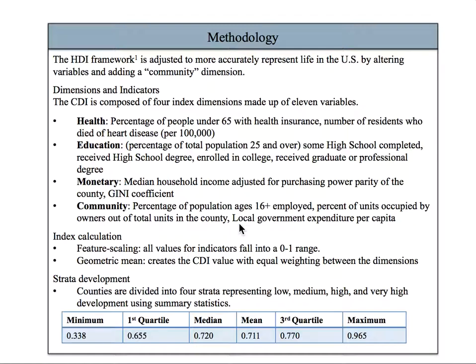The education dimension includes attaining less than a 12th grade education, attaining a high school degree, completing some college, and completing a graduate degree. These four variables describe the population's education level.